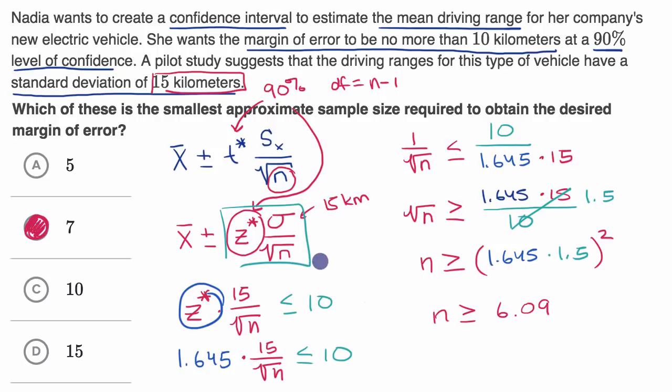And of course we won't really know until we actually conduct the study. We obviously here used an estimate of the population standard deviation and we used a z table. But it will be interesting when Nadia actually conducts the study to see if our margin of error is indeed no more than 10 kilometers with a 90% level of confidence.